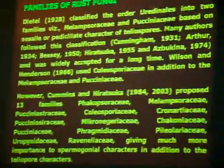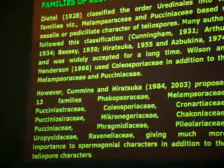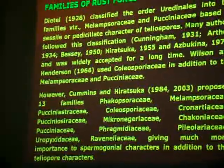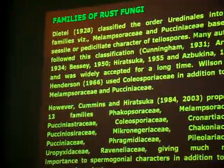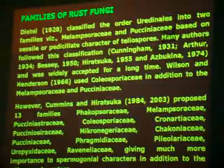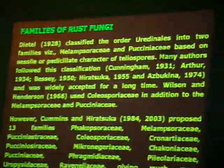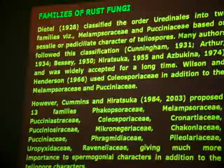The latest classification suggested by Kamins and Hirotsuka proposes nearly 13 families, including Phacapsoraceae, Melamsoraceae, Pucciniastriaceae, Coleosporiaceae, Cronarchaeaceae, Puccino-siraceae, Micronidiaceae, Chaconianaceae, Pucciniaceae, Passargeriaceae, and others.